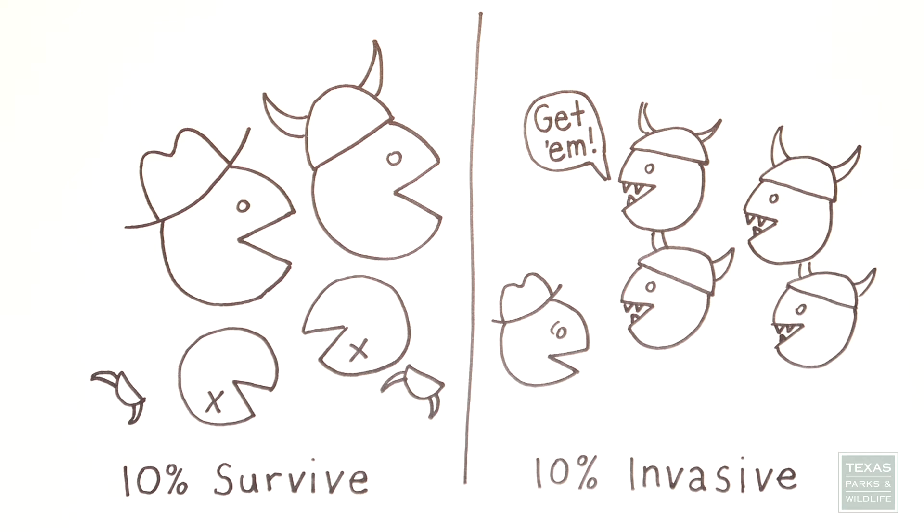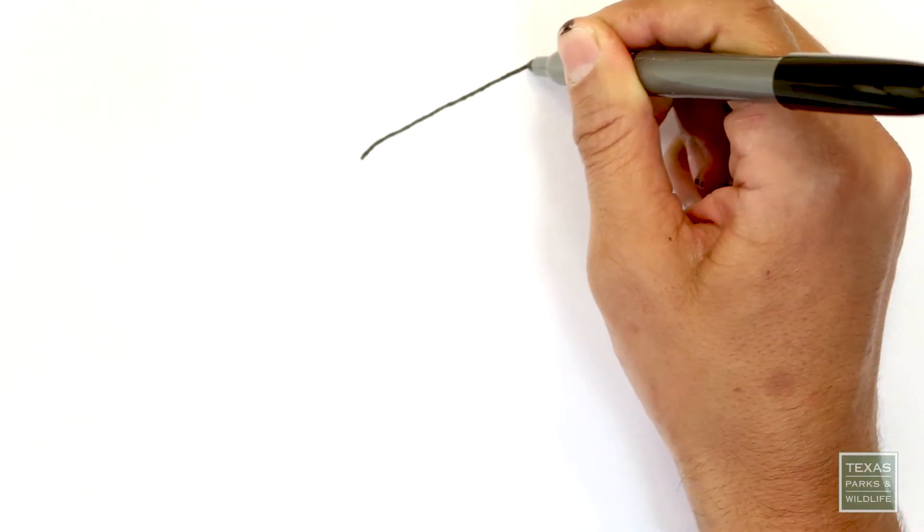And invasive species can do real damage, not just to the ecosystem, but also to human infrastructure. For example, zebra mussels,